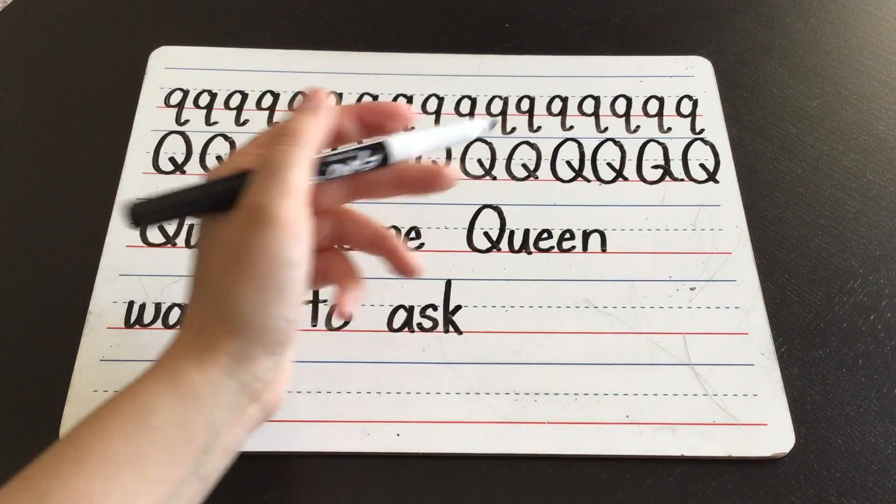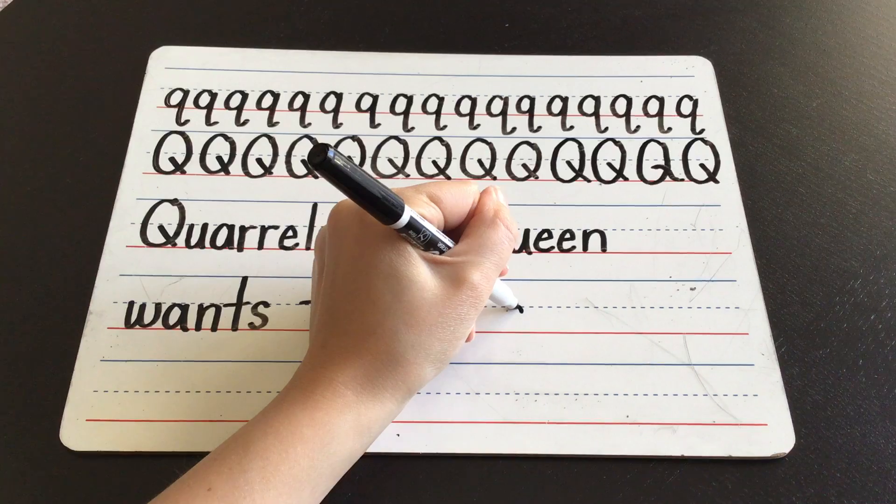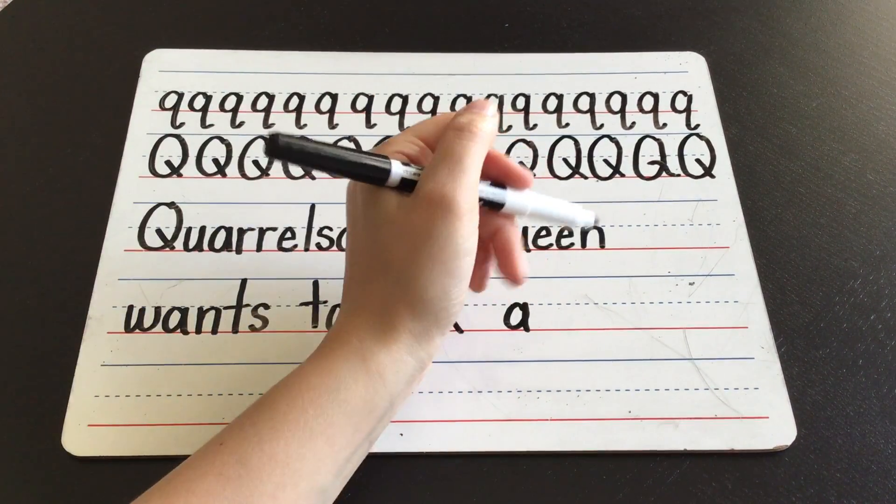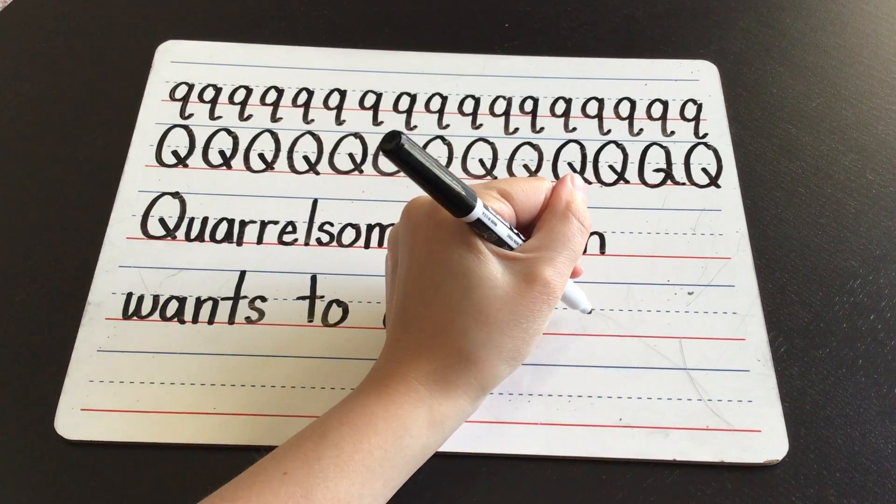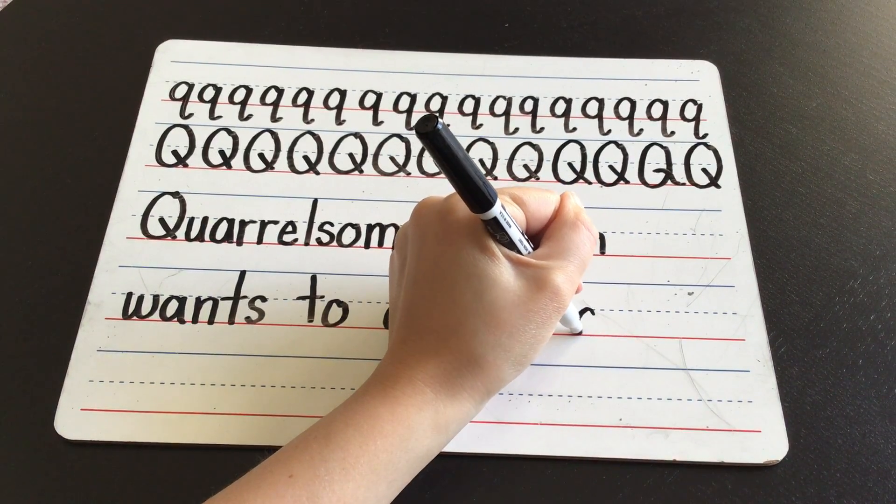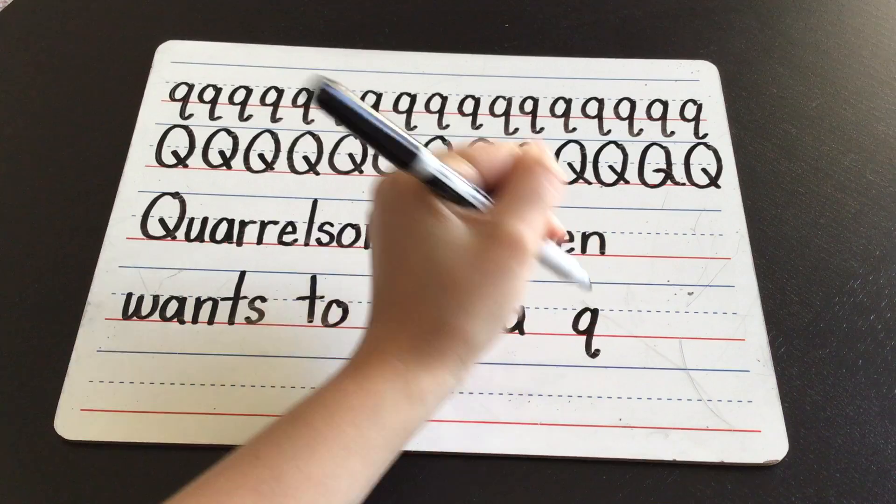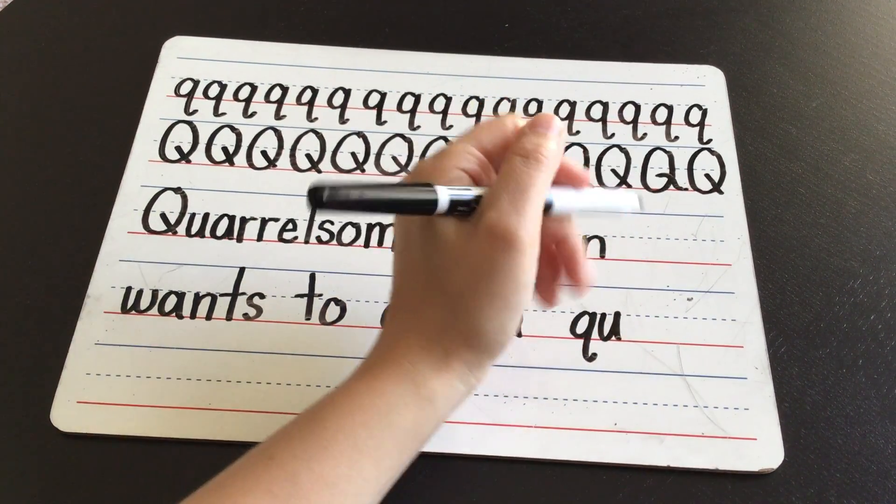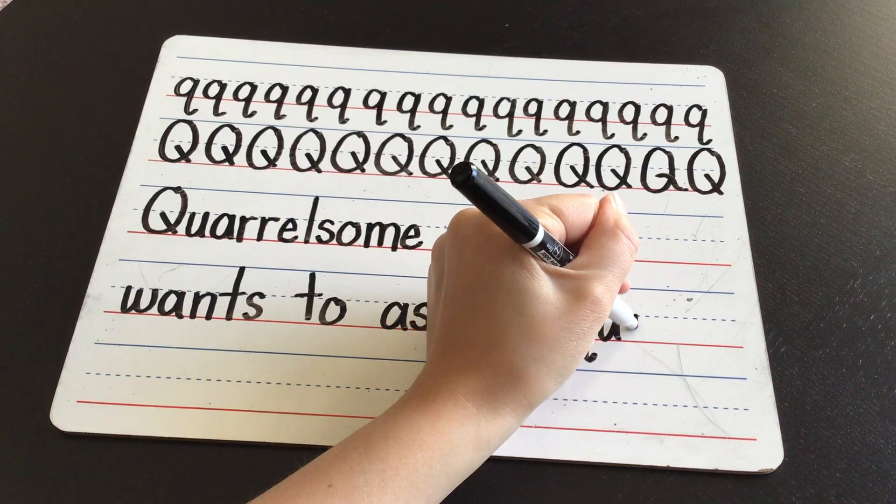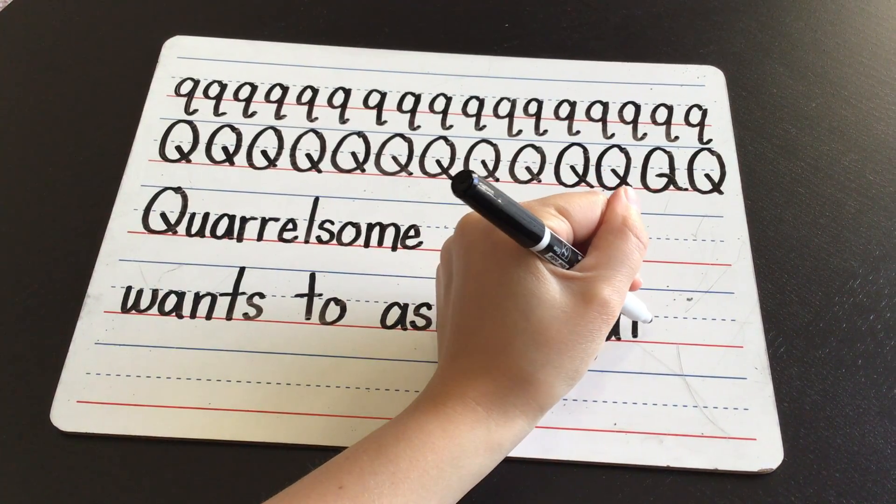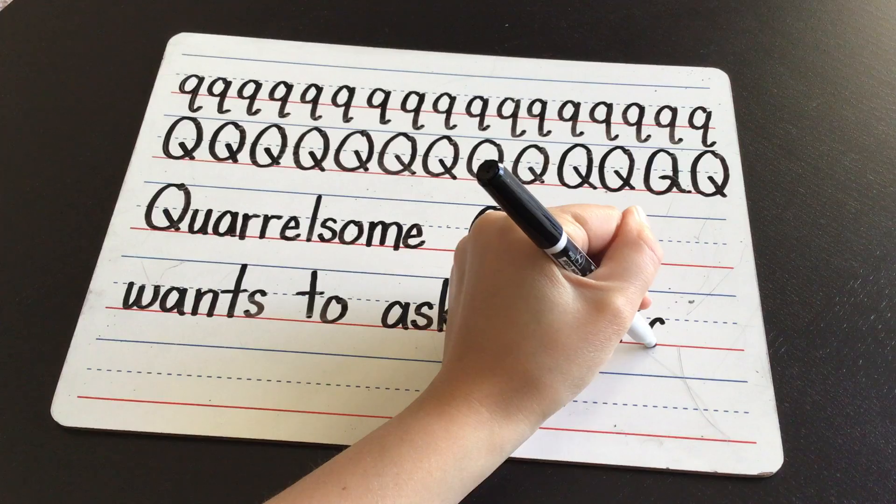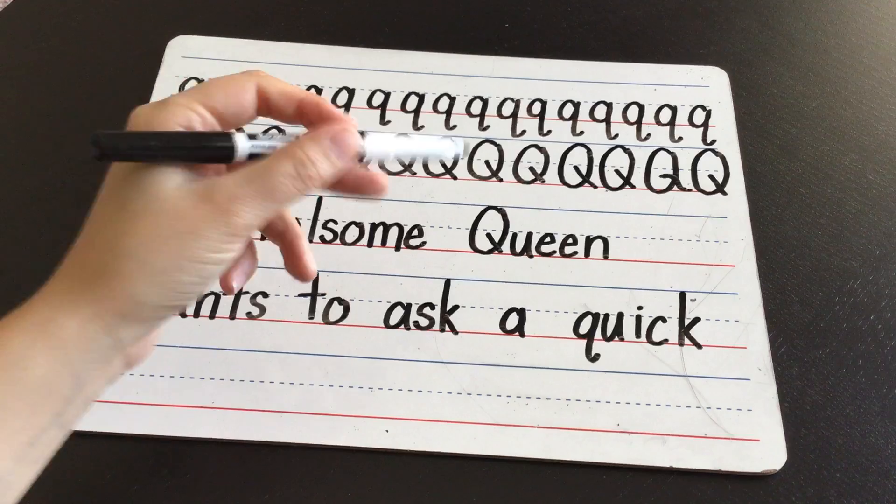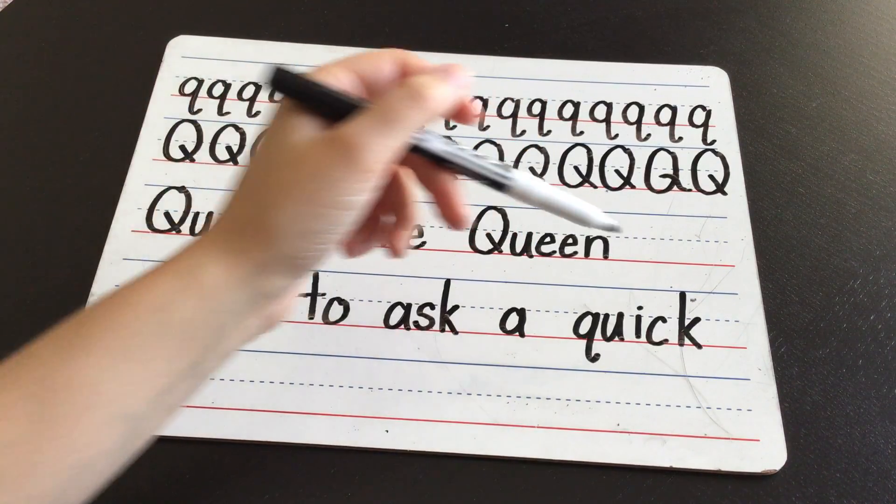Quarrelsome queen wants to ask space a easy word. Quarrelsome queen wants to ask a quick. So we need a lowercase Q. Who always comes next? You. Quarrelsome queen wants to ask a quick. It's our CK together at the end, right? Keeping each other company.